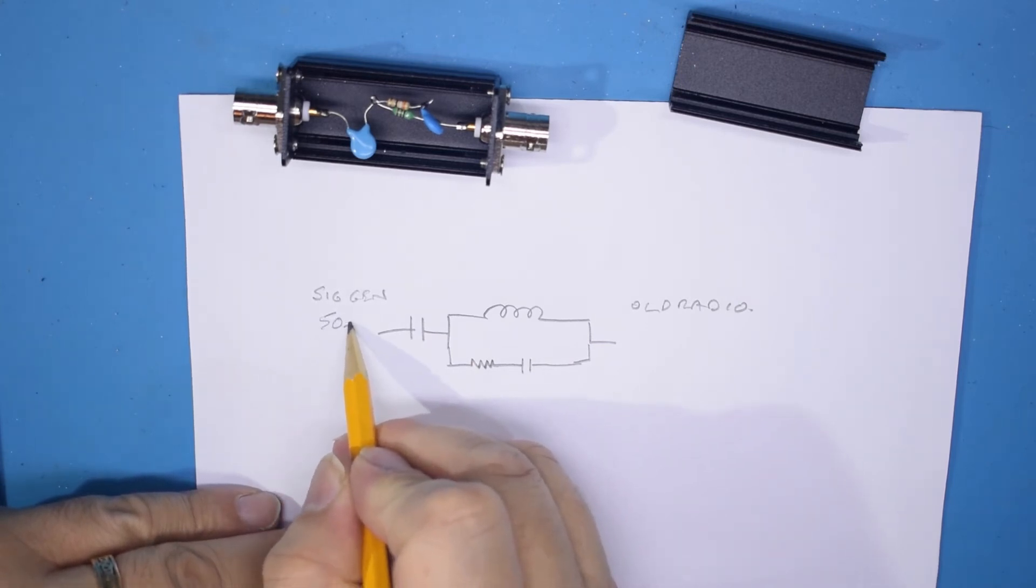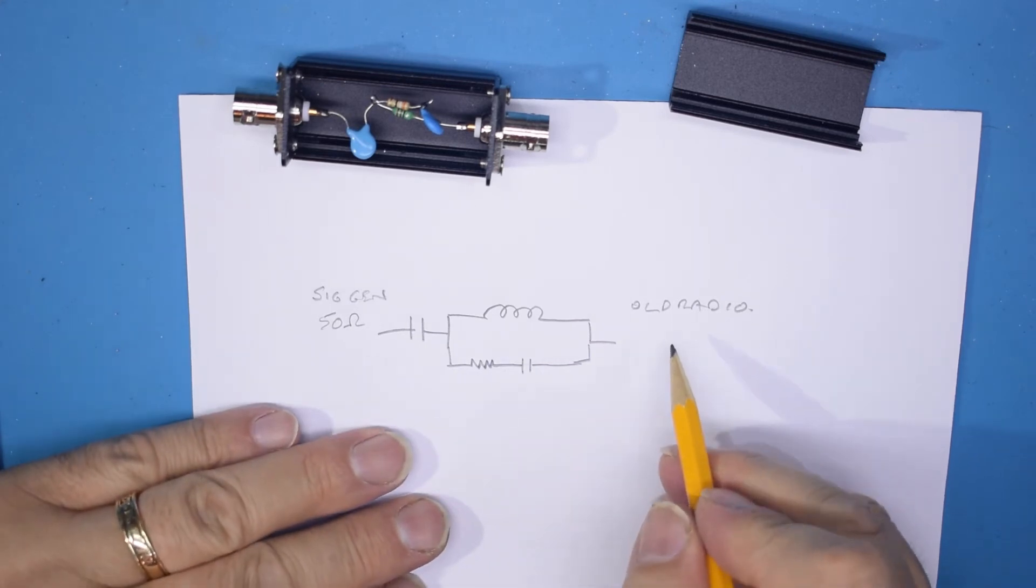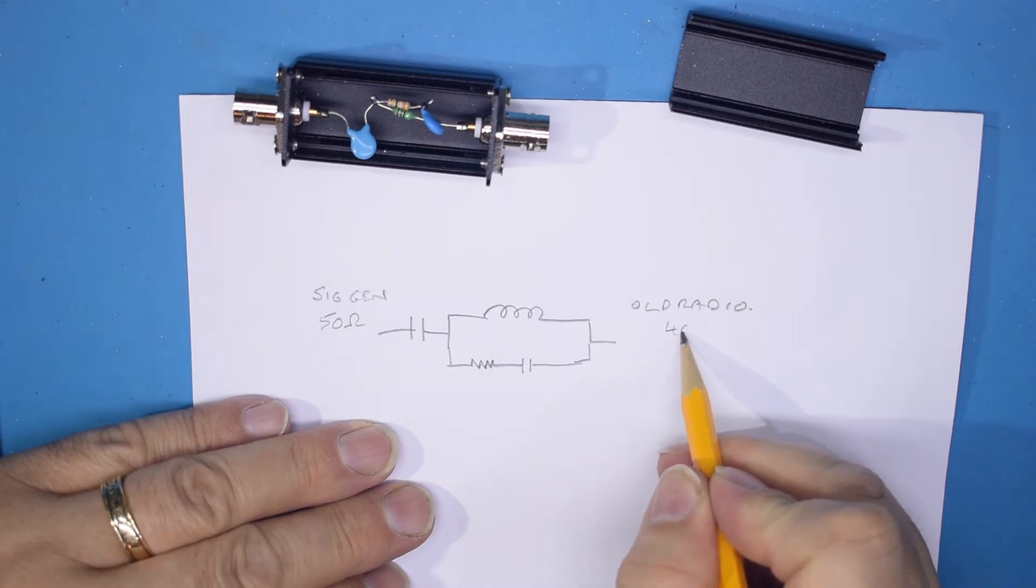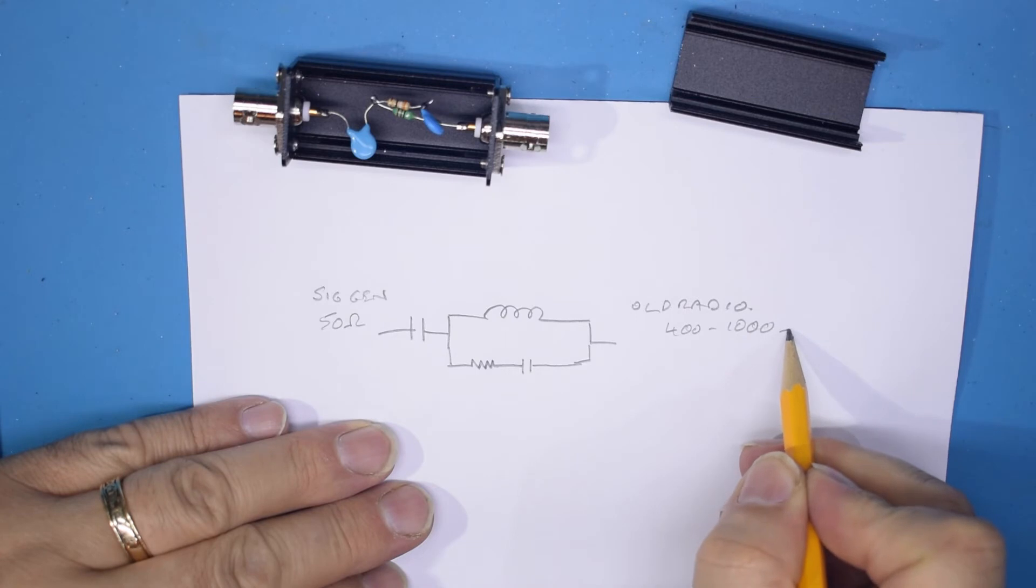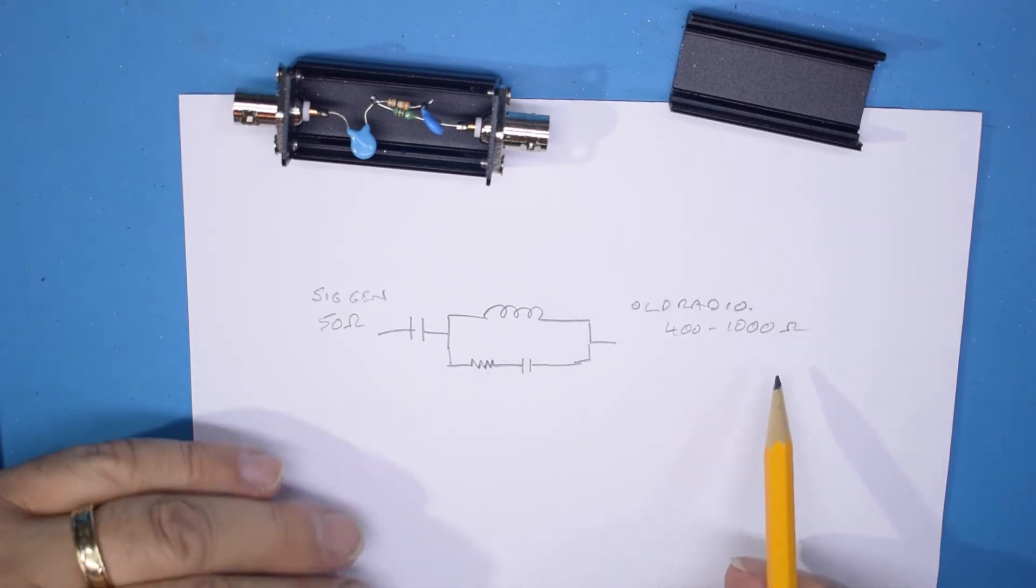And the signal generator is a nice low 50 ohm output, whereas the old radio is expecting to see something between say 400 and 1000 ohms as an impedance on the aerial input.